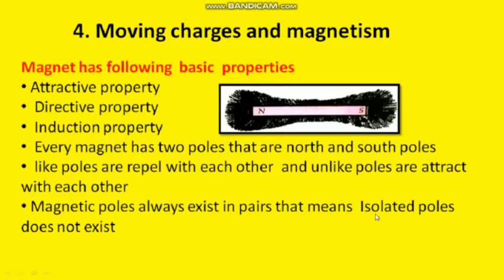Magnetic poles always exist in pairs — isolated poles do not exist. If you have a magnet with two poles, north and south, and you cut it into several pieces, then each piece has two poles, north and south. We cannot produce isolated poles.